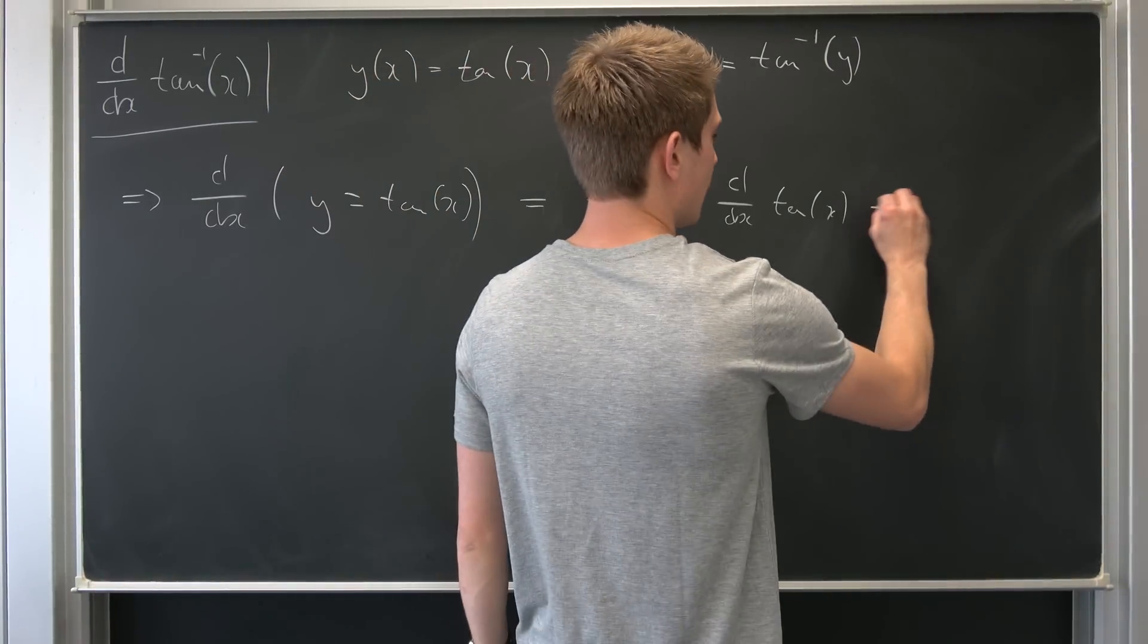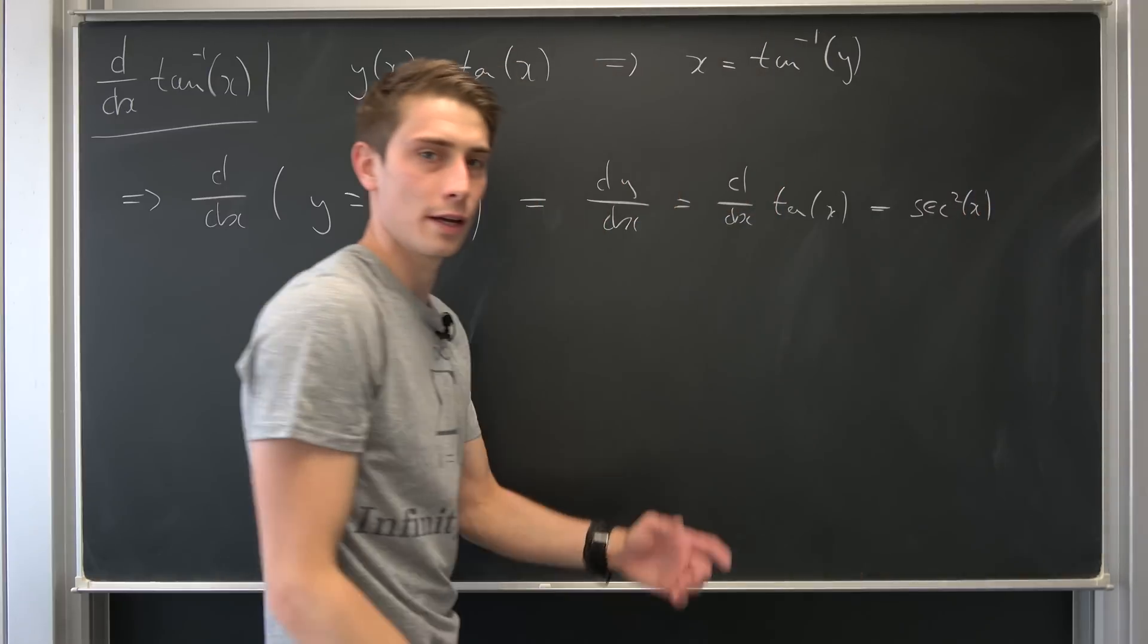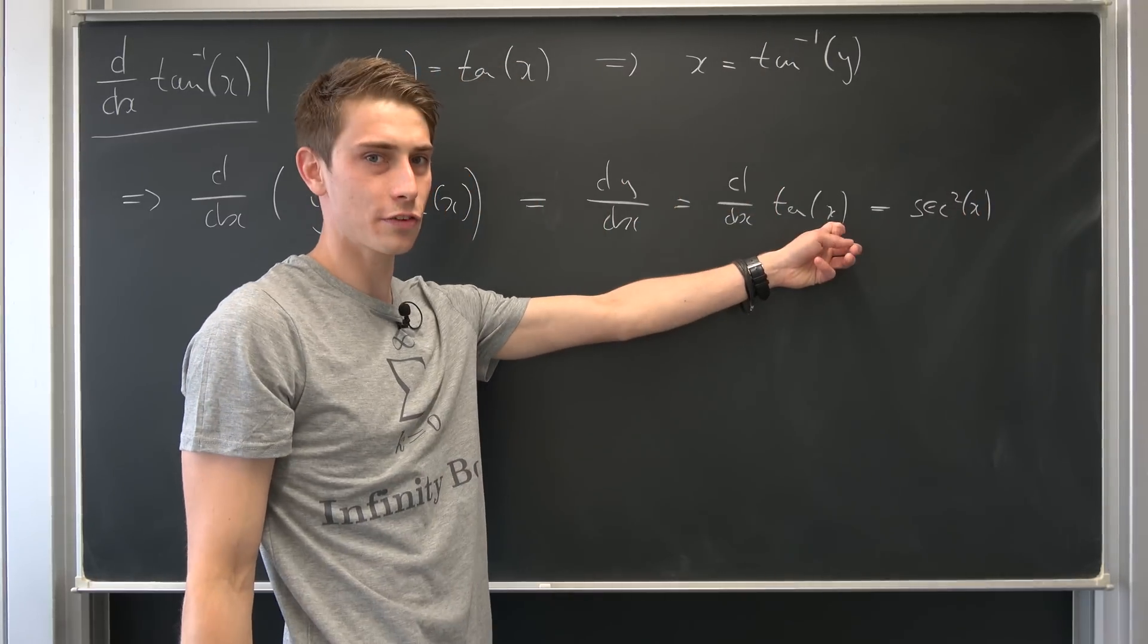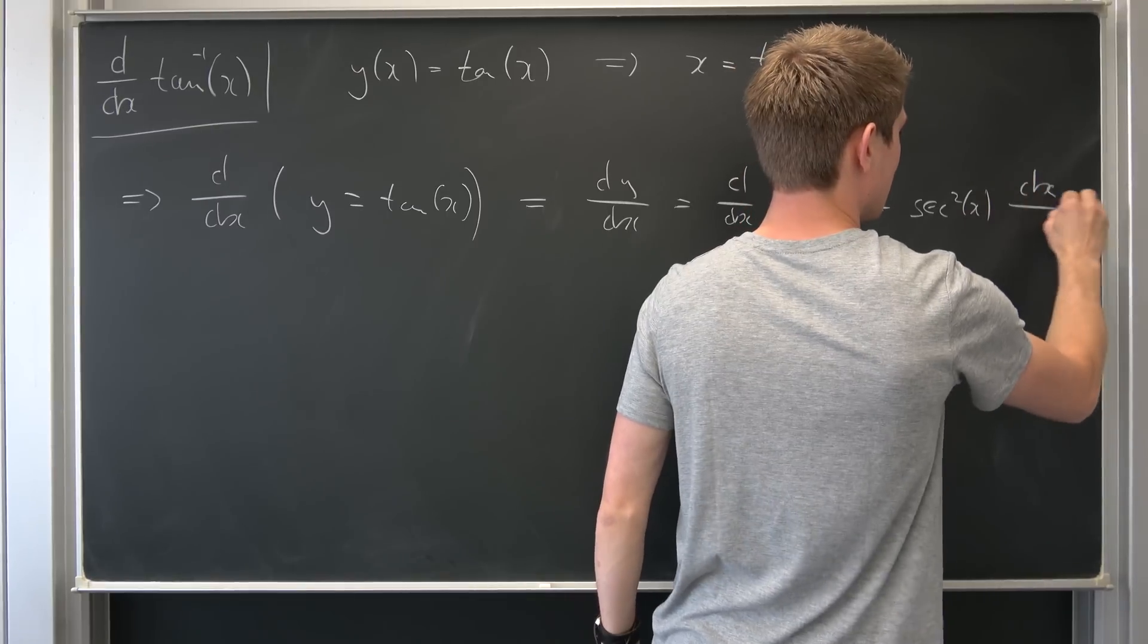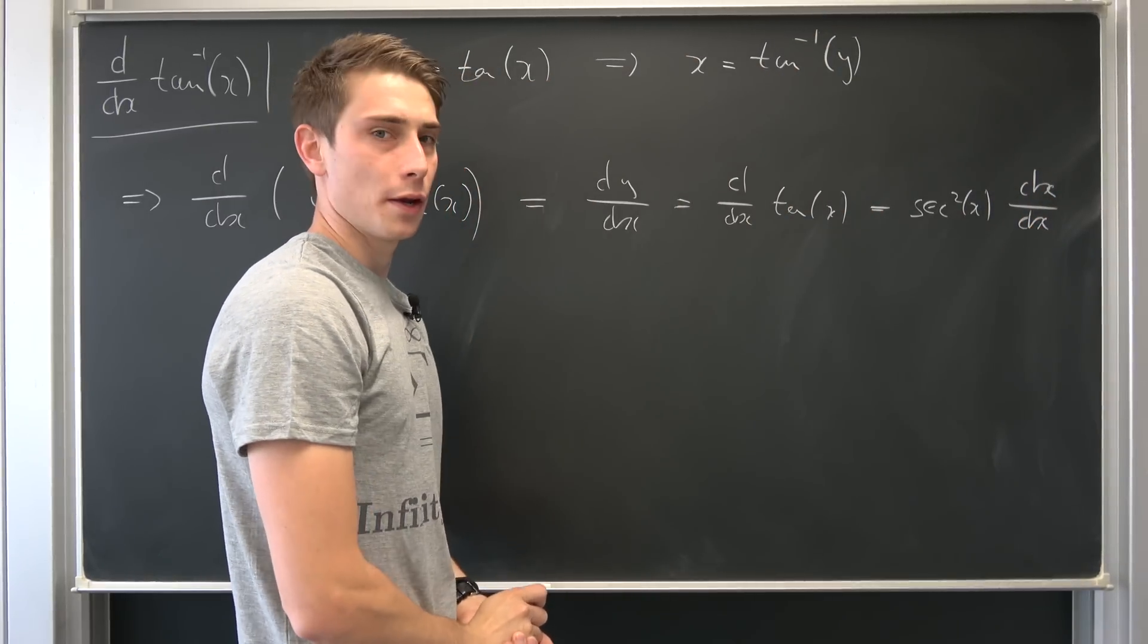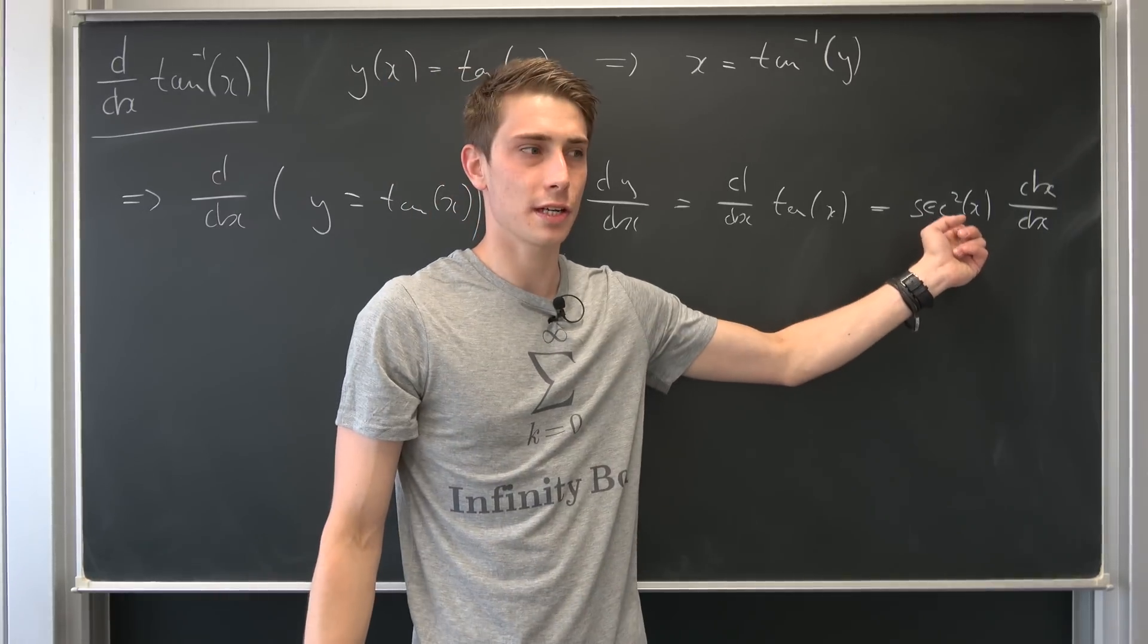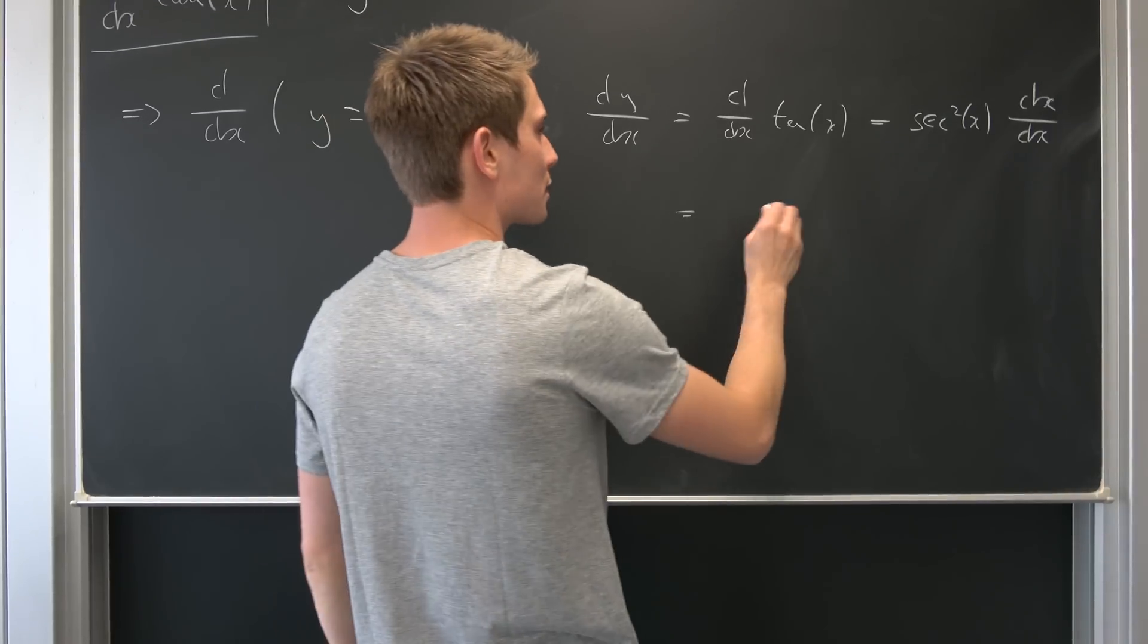Anyways, you are going to end up with the secant squared of x times the derivative of the argument in here. It might seem trivial, but don't forget that, dx differentiated with respect to x. But what exactly is the secant squared? Secant squared is 1 plus tangent squared by the fundamental theorem of trigonometry.